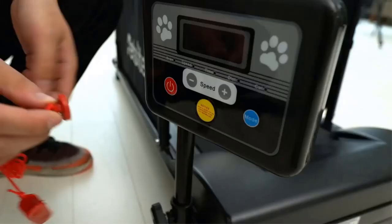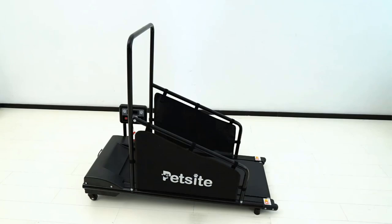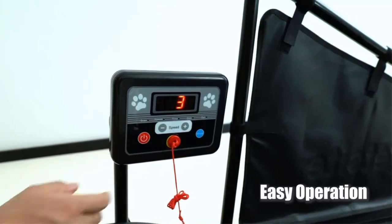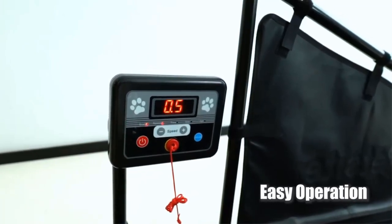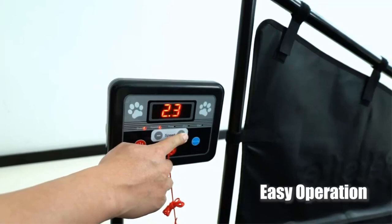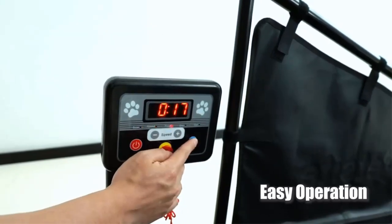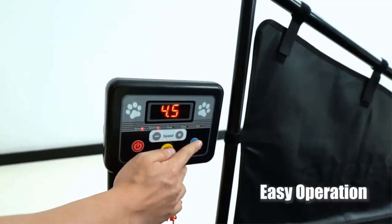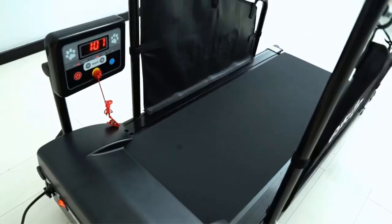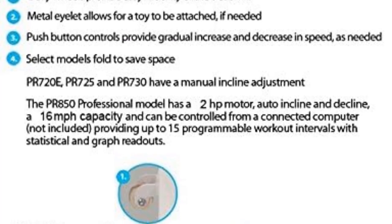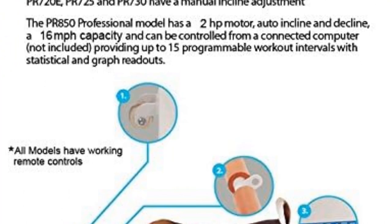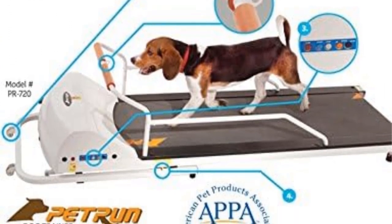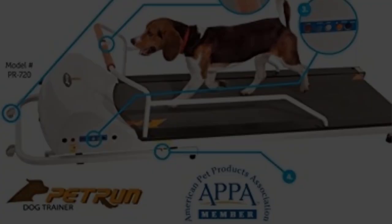One of the standout features of the Go Pet Pet Run PR 720F is its air-cylinder auto-fold system, which makes it easy to store when not in use, helping you save space in your home. This feature is especially convenient for pet owners with limited space. The treadmill is designed with versatility in mind, allowing for the exercise of multiple dogs. It features a low running platform, making it easy for dogs to hop on and off. Additionally, it offers both remote and manual control options, giving you the flexibility to adjust the speed and timer as needed.